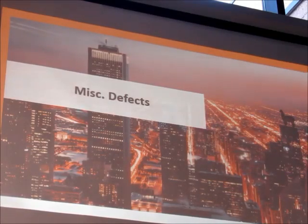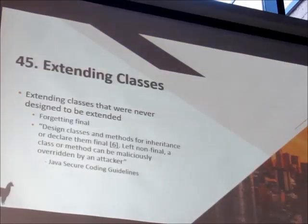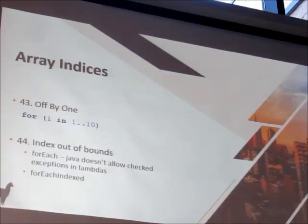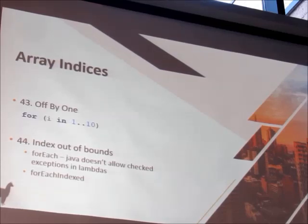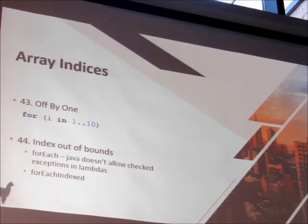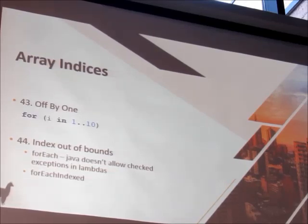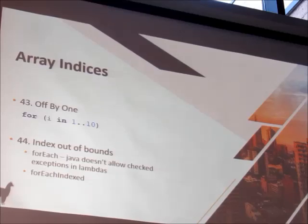A bunch of miscellaneous preventative features. Array indexes and off-by-one errors: it's much simpler to define loops in Kotlin. You just say 'index in 1 to 10' and it's inclusive — very clear. You could say 'down to 1' if you want reverse direction. It's so much clearer and more obvious that it avoids silly mistakes.